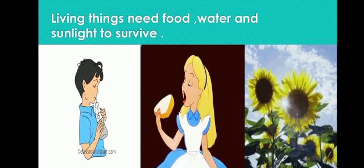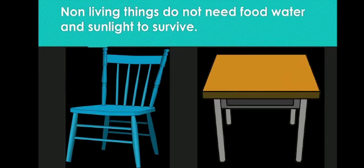The third difference is that living things need food, water, and sunlight to survive. Look at the picture — the boy is drinking water, the girl is eating food, and sunlight is needed by plants to survive. Non-living things like chair and table do not need food, water, and sunlight to survive.